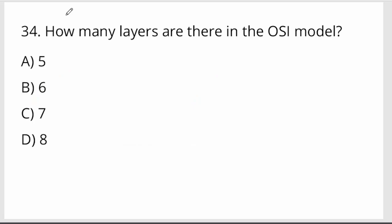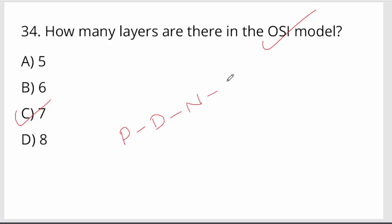How many layers are there in the OSI model? There are 7 layers: Physical, Data Link, Network, Transport, Session, Presentation, and Application — where Application is the topmost layer.